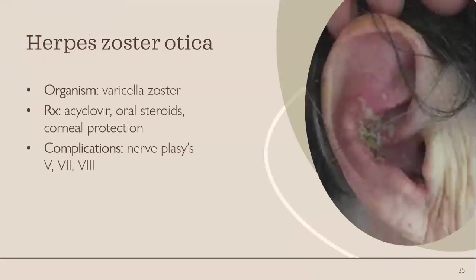Herpes zoster oticus is caused by varicella zoster virus. Patients usually present with otalgia described as a burning pain. After three to seven days, vesicles may appear — either obvious externally or inside the ear canal, so adequate examination is important. They can also present like Bell's palsy with vertigo and dizziness. Treatment includes acyclovir, oral steroids, and corneal protection. Complications include cranial nerve palsy involving cranial nerves five, seven, and eight.